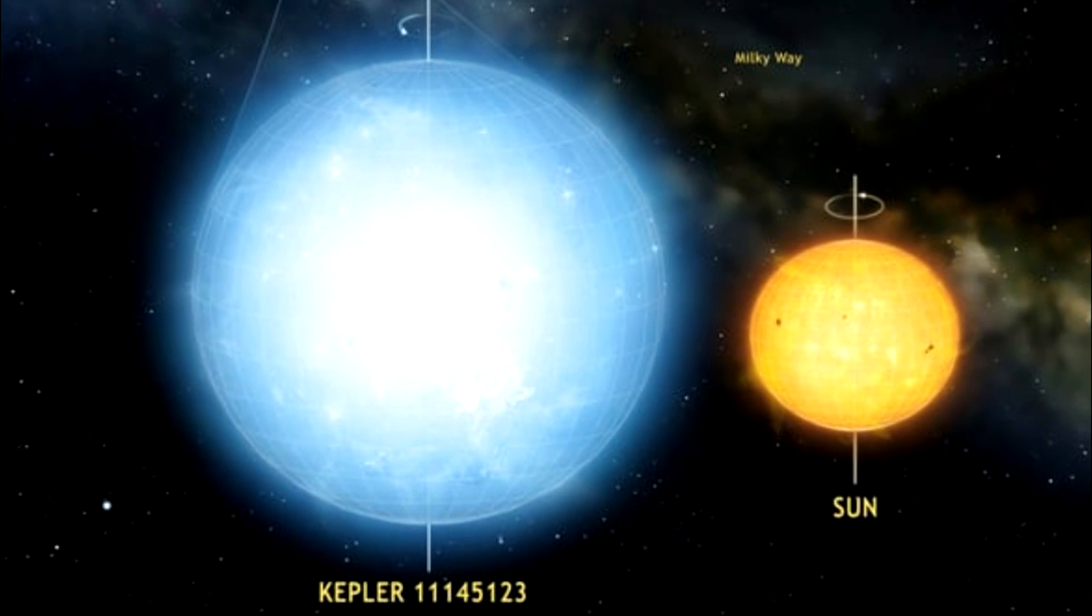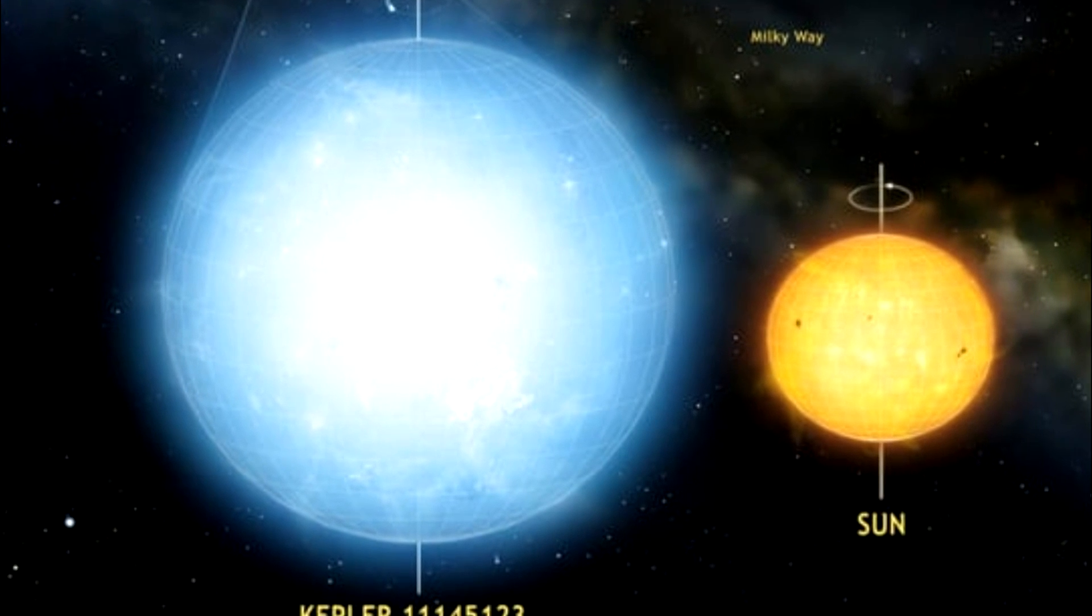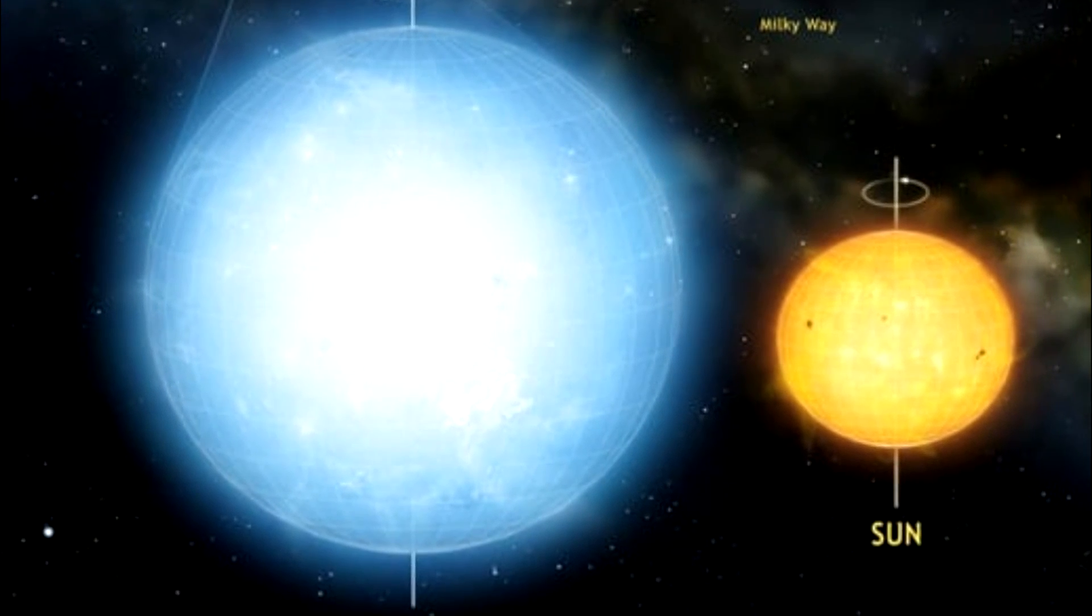The star Kepler 11,145,123 is the roundest natural object ever measured in the universe.